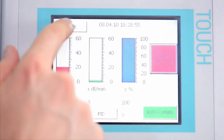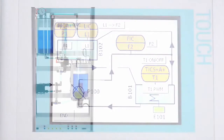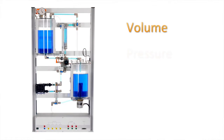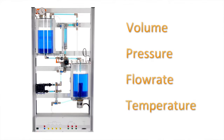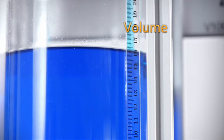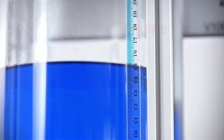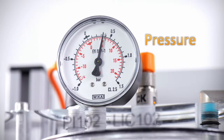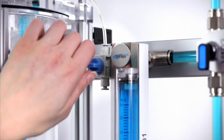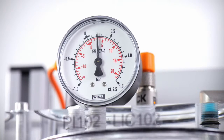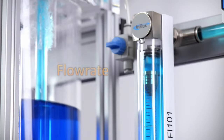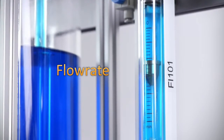Whether you work with Unitrain or a PLC, you can read the volume, pressure, flow rate, and temperature variables right off of the station. The manometer indicates the pressure in the water tank. The flow rate can also be read off directly.